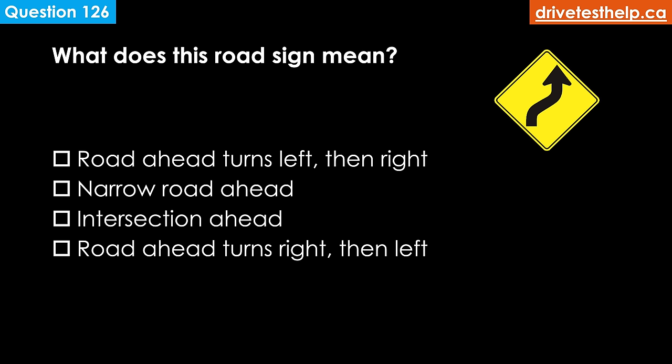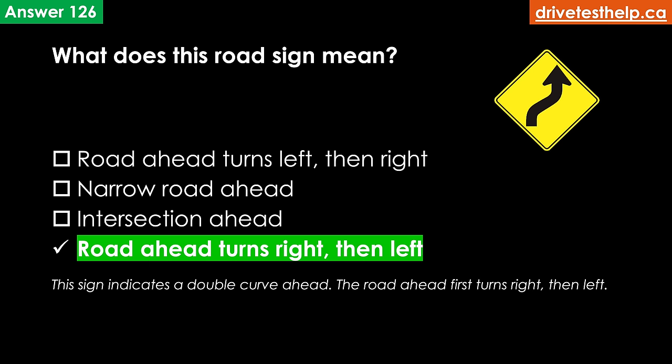What does this road sign mean? Options: road ahead turns left then right; narrow road ahead; intersection ahead; road ahead turns right then left. The correct answer is road ahead turns right then left. This sign indicates a double curve ahead — the road ahead first turns right, then left.